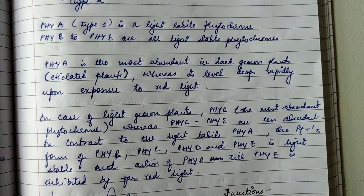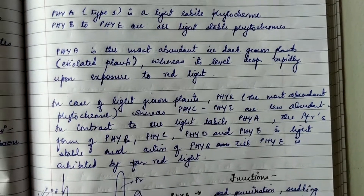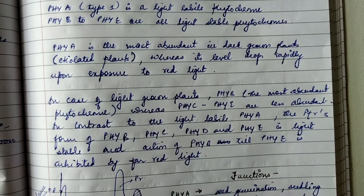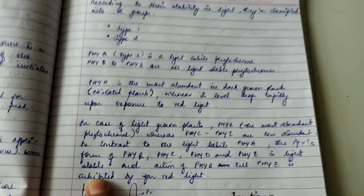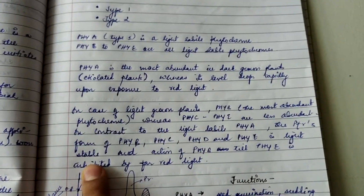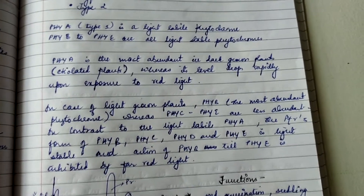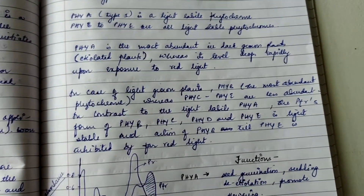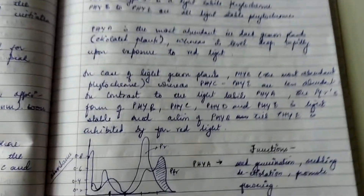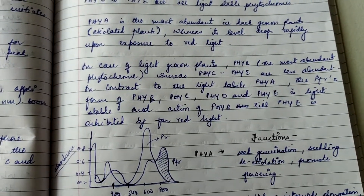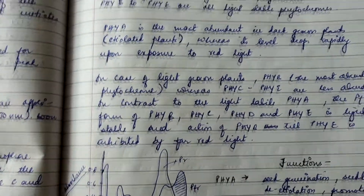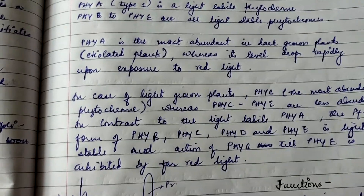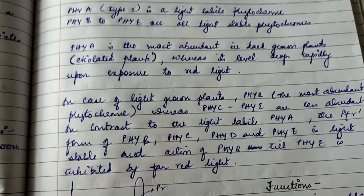In contrast to the light-labile PhyA, the Pfr forms of PhyB, PhyC, PhyD, and PhyE are light-stable. The action of PhyB through PhyE is inhibited by far-red light. You need to memorize which phytochrome belongs to which type, which is light-labile versus light-stable, and which is most or least abundant.